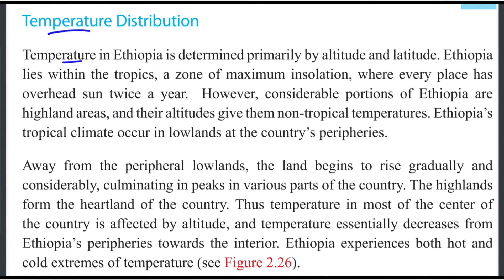Ethiopia is in the zone of tropics, the zone of maximum insolation. Every place in Ethiopia has overhead sun twice a year.